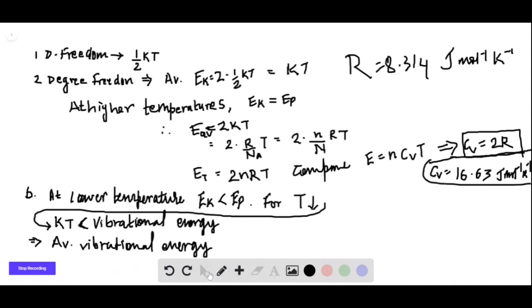This implies average vibrational energy—before it was 2kT, but now average energy is less than 2kT. This vibrational energy contains both kinetic and potential. Since E average is less than 2kT, this implies CV also lowers.